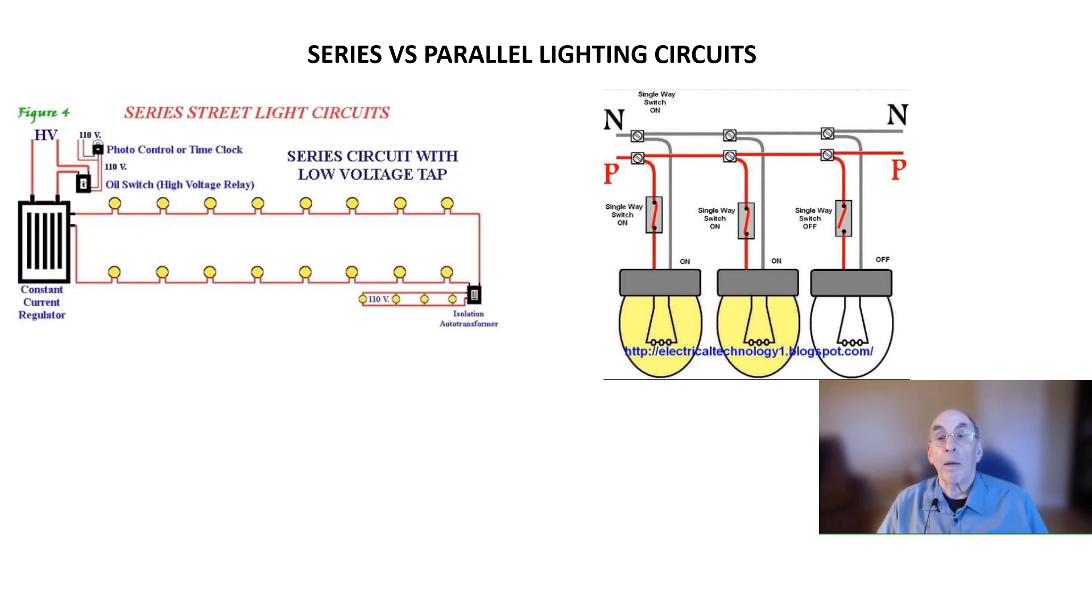When a lamp burns out, the voltage across the shunt starts to rise, and this causes a thin insulator between the two parts of the shunt to burn through, allowing the current that was going through the lamp to flow through the shunt instead.